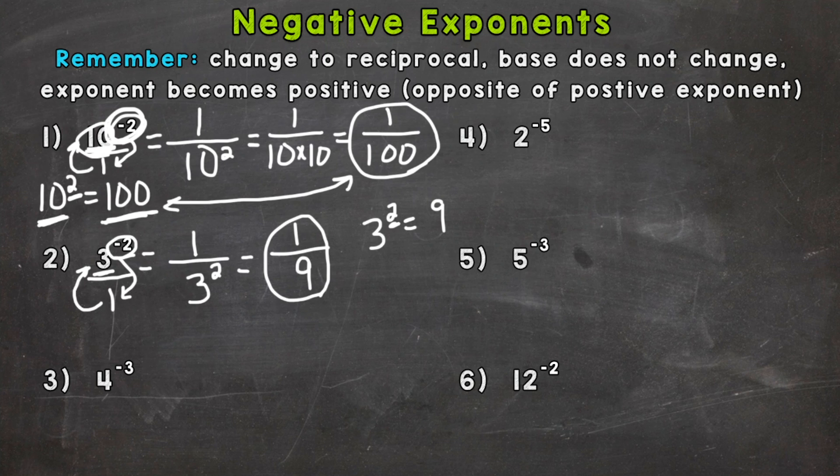Let's take a look at number 3. Changing to the reciprocal, we get 1 over 4 to the power of positive 3. That would be 4 times 4 times 4. Well, 4 times 4 is 16, times 4 is 64, so we get 1/64.